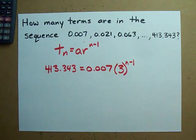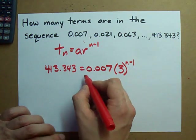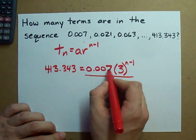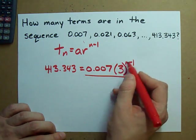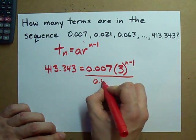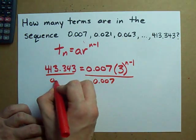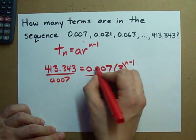How do you solve this, though? The first step is to divide out the coefficient on this exponential piece here. Divide both sides by 0.007. That will help cancel that out.